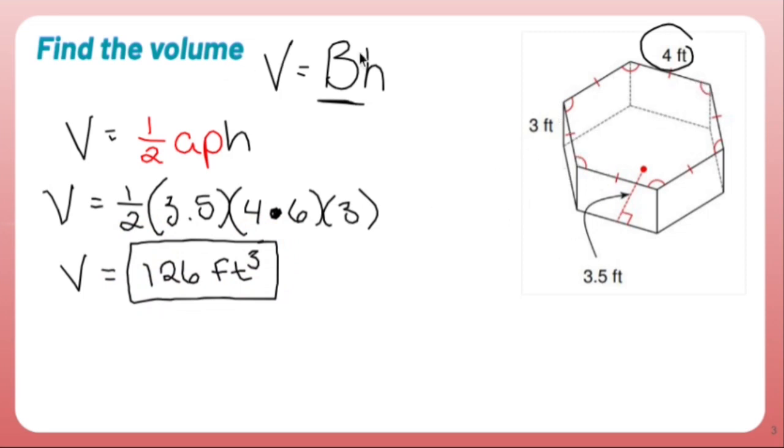But the volume of any prism is the area of the base times the height. We were able to break it down a little bit further since the bases were regular polygons. So many things that I have to say, my words get jumbled up. But there you go, 126.